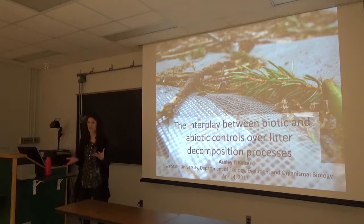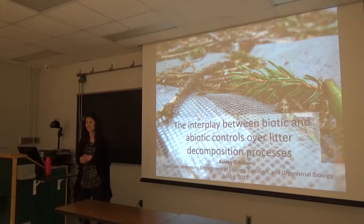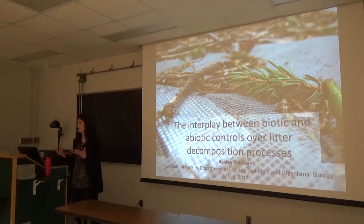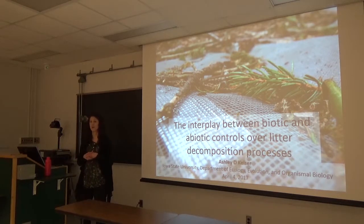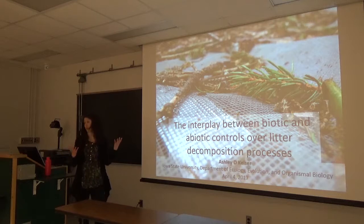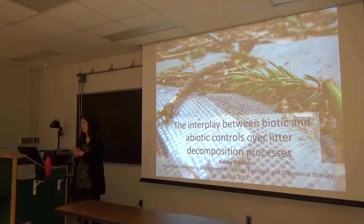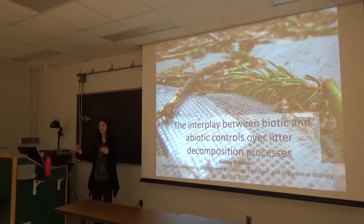Plants grow extensive root networks below ground that form intimate relationships with soil microbial communities. And then on the other end of the spectrum, especially in temperate systems, we think of plant leaf litter, which at the end of the growing season drops from leaves and creates a pulse of organic matter that enters the decomposition pool and the cycling of carbon and nitrogen back through the soil pathway to be made available once again.